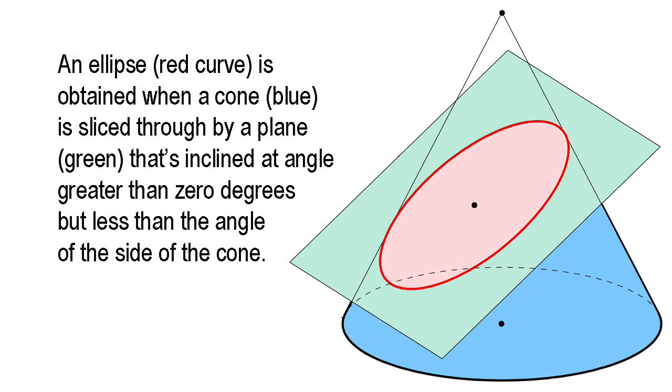An ellipse is a type of conic section, along with the circle, the parabola, and the hyperbola. It's the shape you get if you slice through a cone with a plane that's inclined at an angle greater than zero, because that would give you a circle, and less than the angle of the side of the cone, because that would give you either a parabola or a hyperbola.